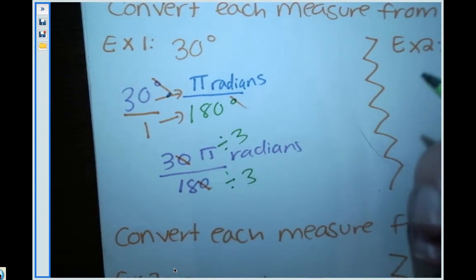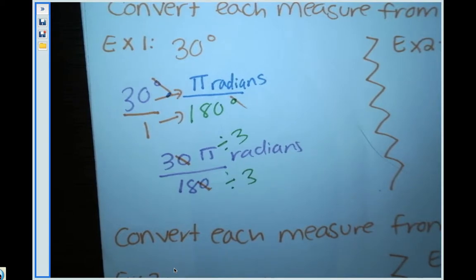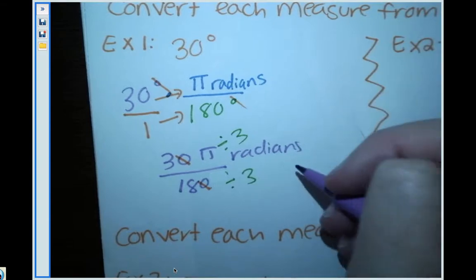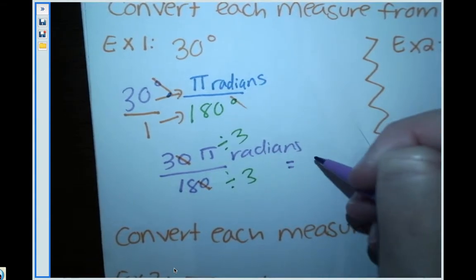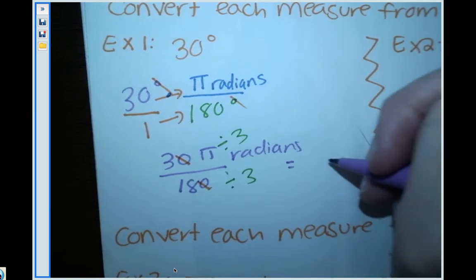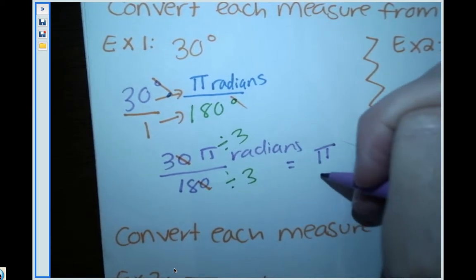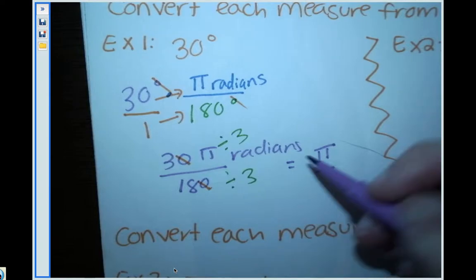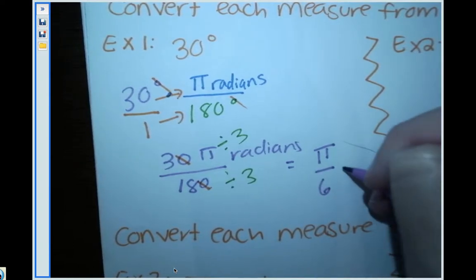I did not space this out very well because I'm going to be running out of space like I normally do. This will equal 3 divided by 3, which is 1, so 1π or just π. That's the same thing. So π over 18 divided by 3 is 6, so this is π over 6 radians.